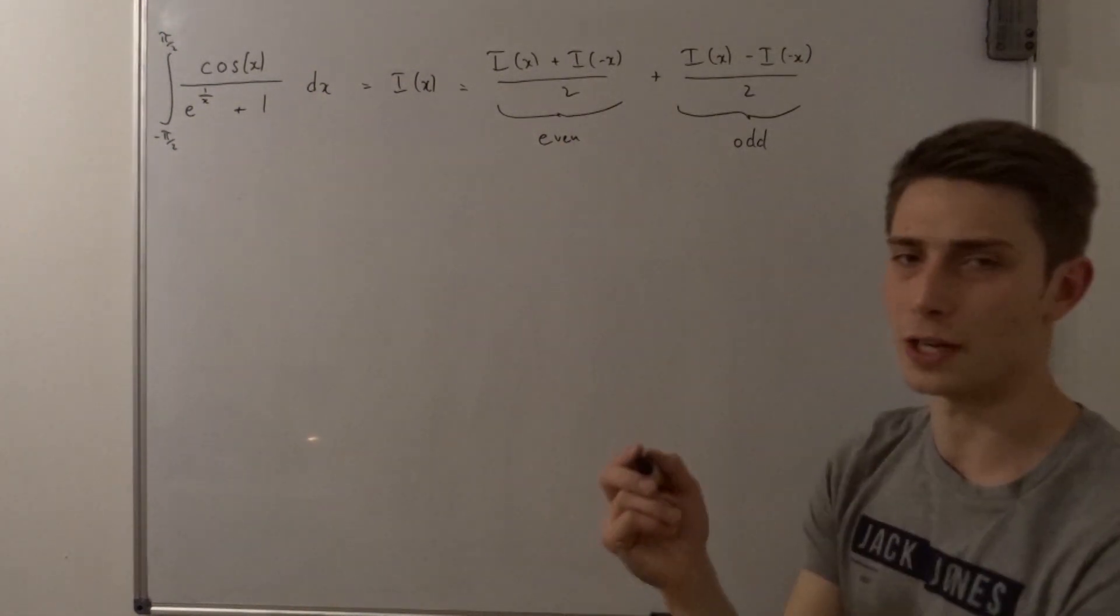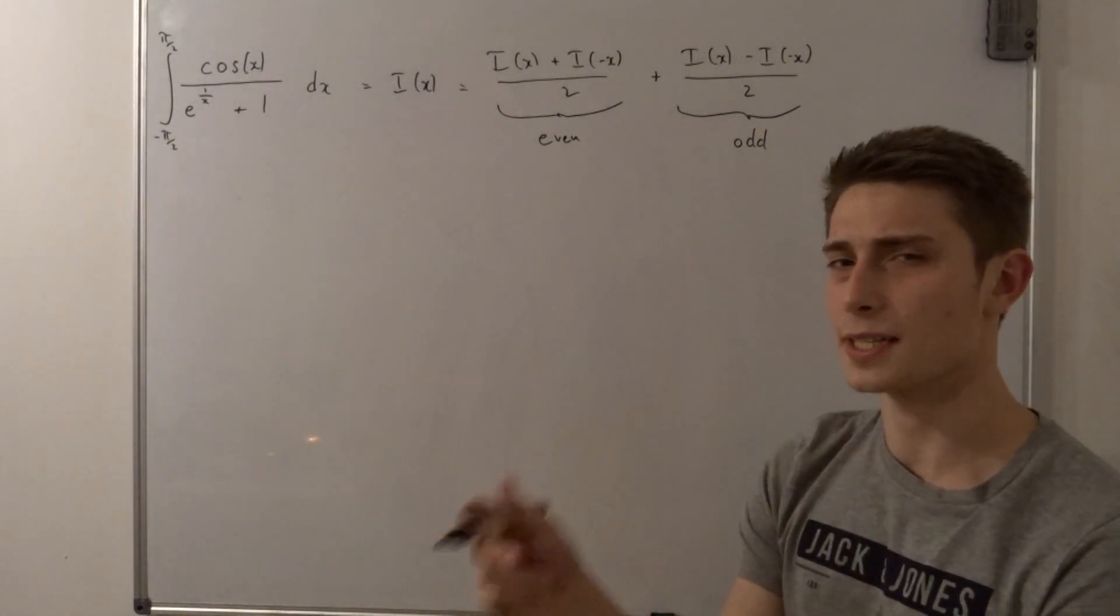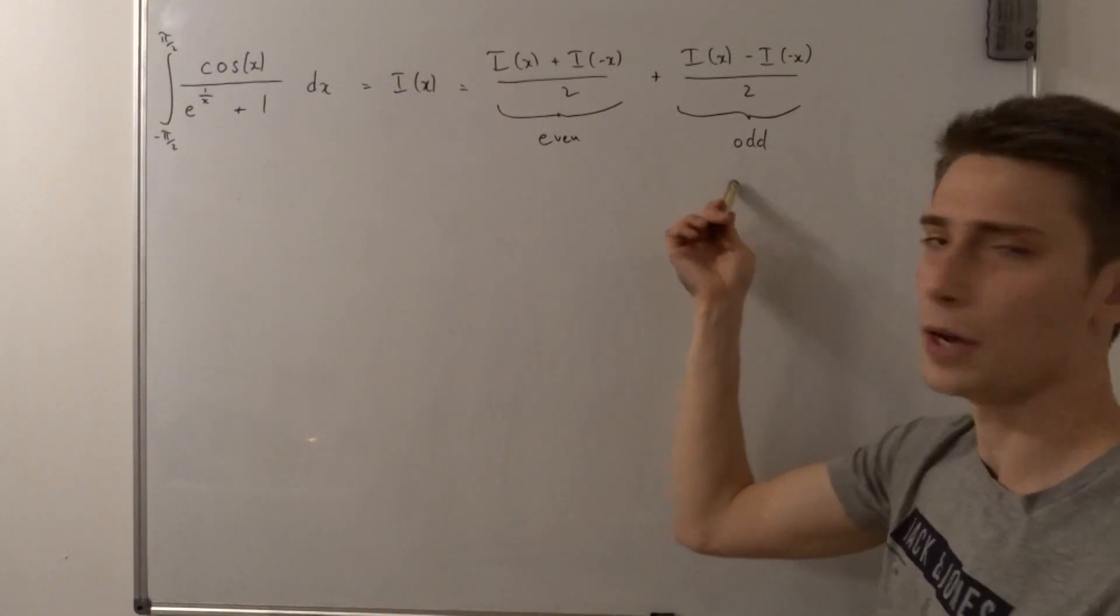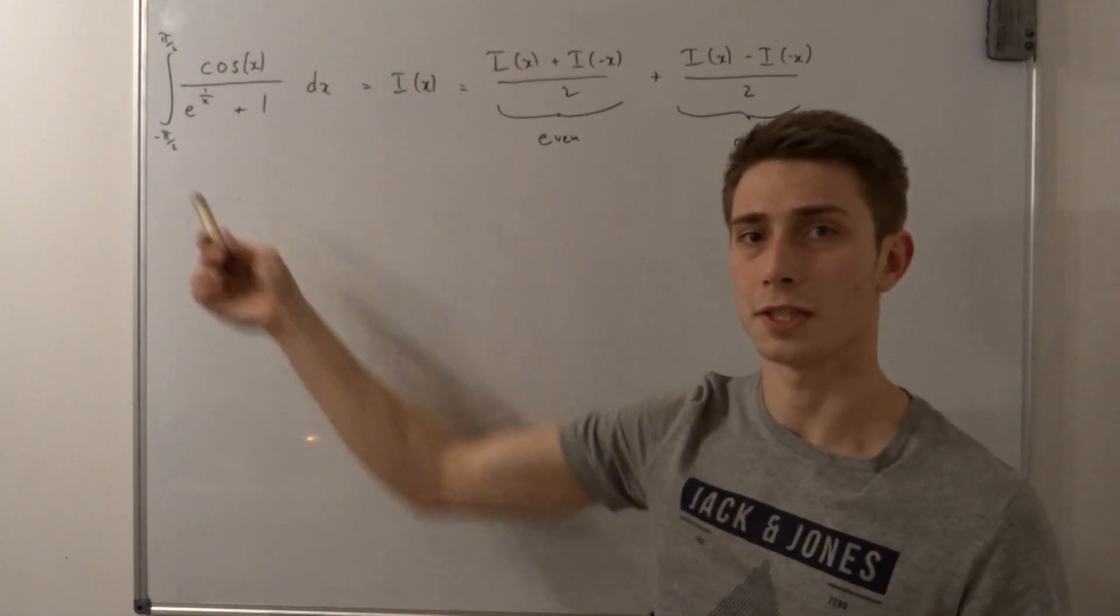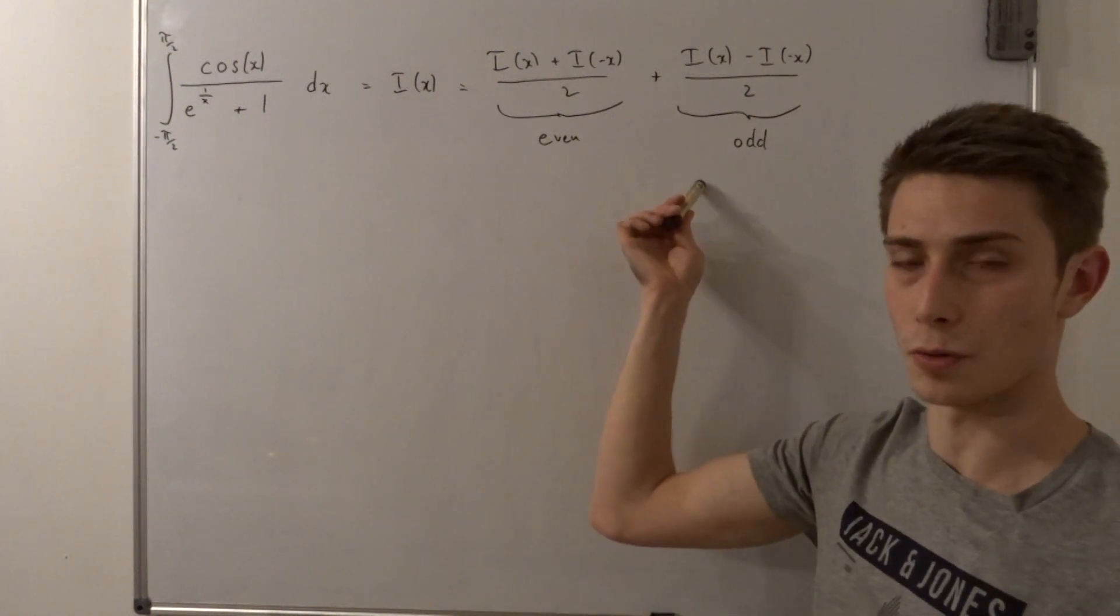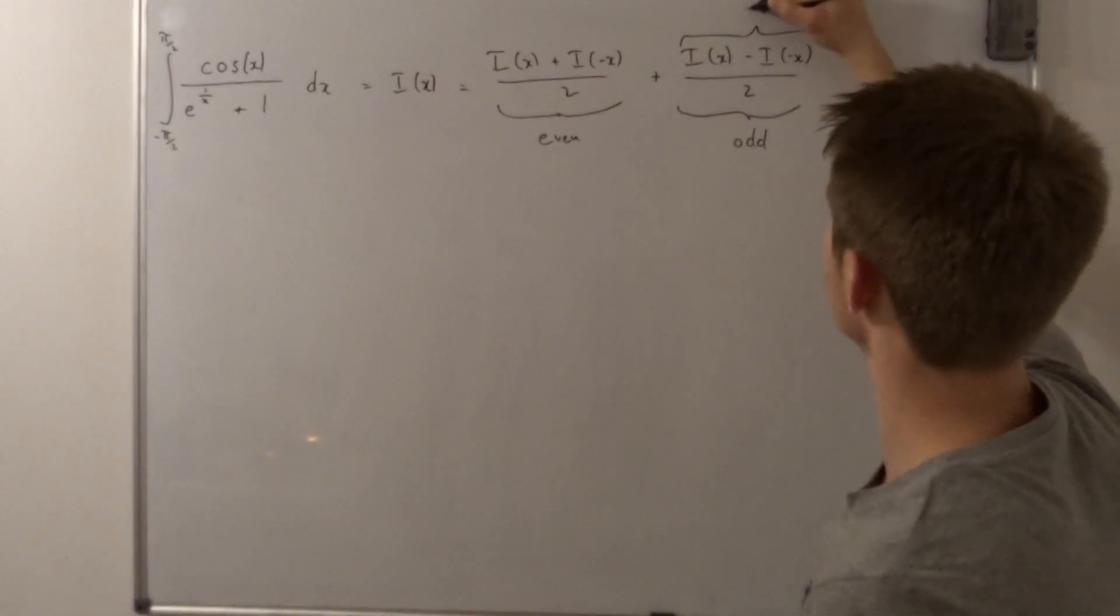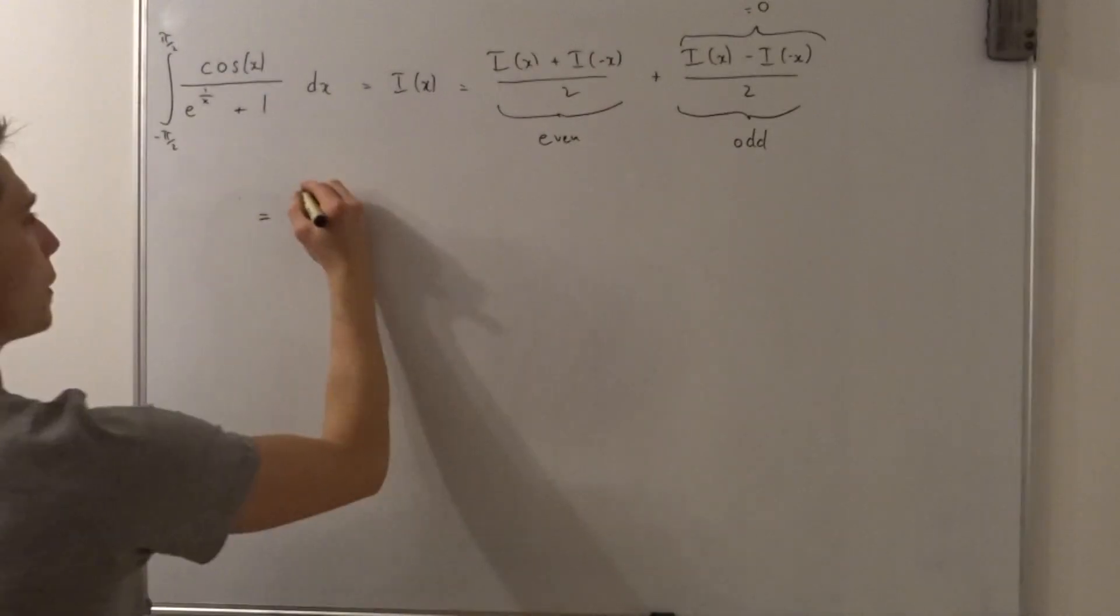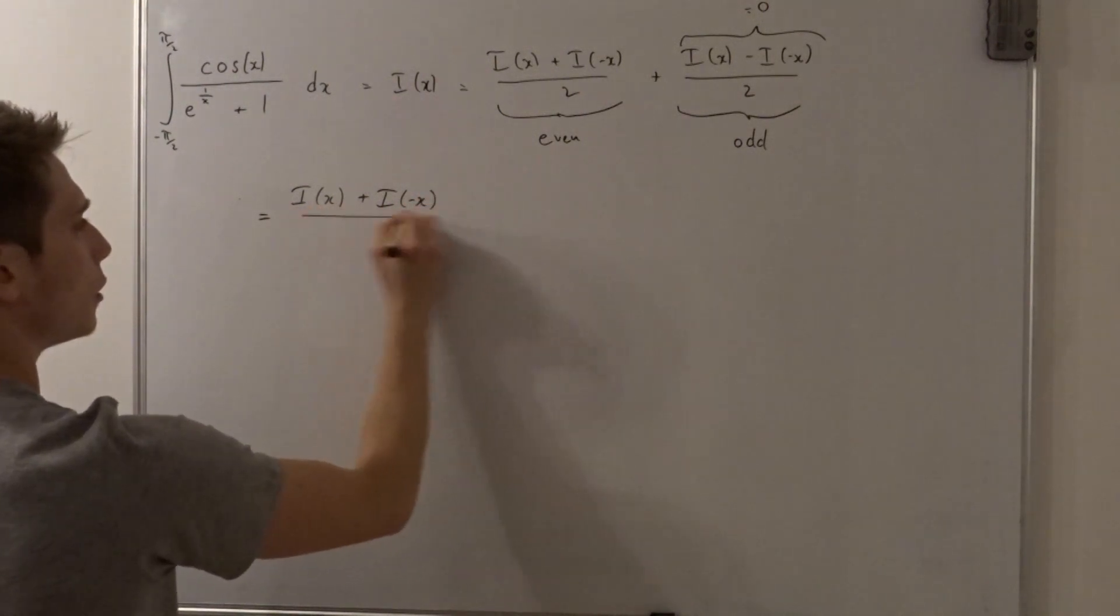And at this point we can already simplify this a lot because what did I say in the beginning? Yeah we are dealing with a symmetric integral so that means if you have an odd integrand over a symmetric integral this just fades away this vanishes completely so we are dealing with a zero right here. So this becomes zero and that's good I guess. So that's a zero and what we end up with is just i of x plus i of minus x over 2.